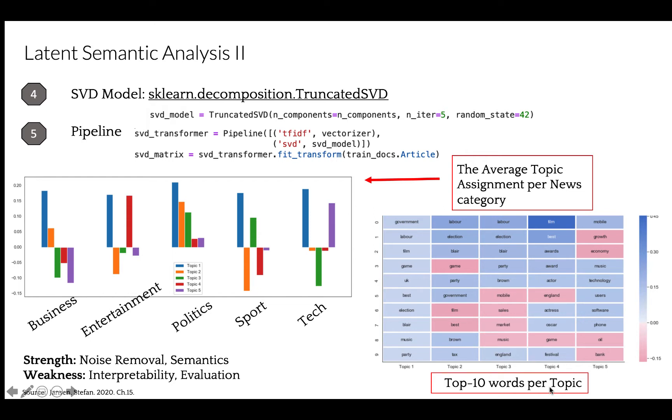The transform method projects documents into the new topic space, that is the result of reducing dimensionality for our document vectors. And by taking the average topic weight per category, we can now project the average topic assignment per category into just two-dimensional space. We can also display the words that are most closely associated with each topic, of course in absolute terms, and the topics appear to capture some semantic information. As you can see, in topic 4, words like Film, Award, and Oscar appear. It sounds like entertainment.